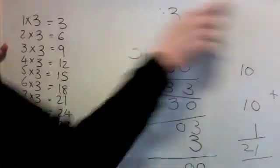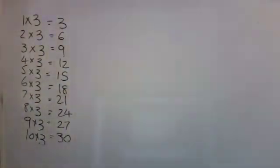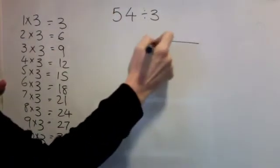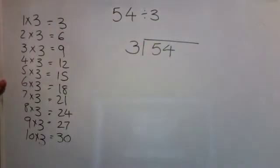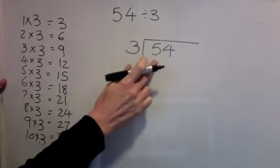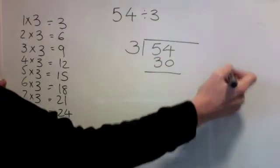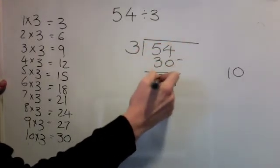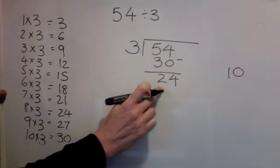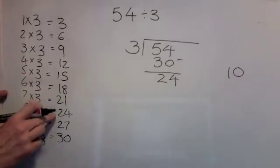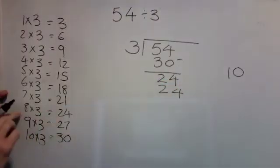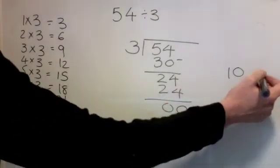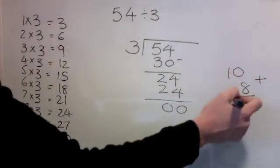One last one and then you can have a go yourself. 54 divided by 3. Bus stop — big number in the bus stop, little number outside. I'm looking for a number as close to 54 as possible without going over — 30. 10 times 3 is 30. Take it away and see what's left. 4 take away nothing is 4. 5 take away 3 is 2. I'm looking for a number as close to 24 as possible without going over. Looking down the answers, I actually have 24. 8 times 3 is 24. Take it away — nothing, so I've finished. 10 plus 8 is 18. The answer is 18.